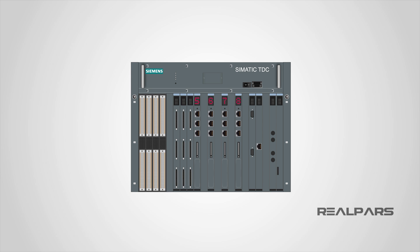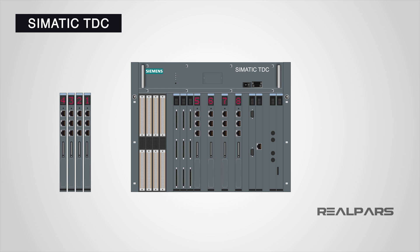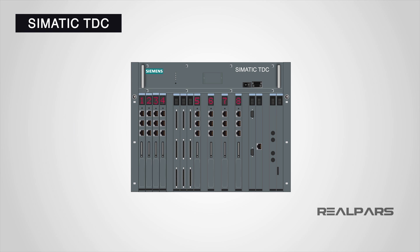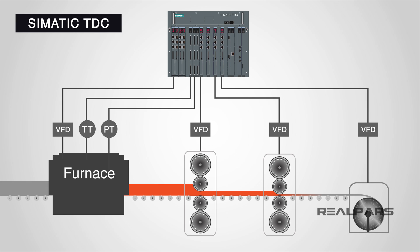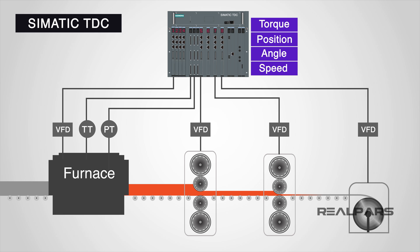We'll start off with an overview of what you can expect from the SIMATIC TDC. The SIMATIC TDC control system is a multiprocessor system, meaning that multiple processors can be housed in the rack. They are designed to provide maximum performance and as such can process commands lightning fast. They are typically used for closed-loop control of drives to determine things like torque, position, angle, and speed. If complex relationships exist between a number of drives, they are also extremely useful for this.